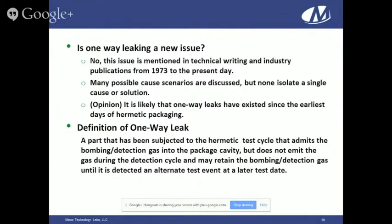Is one-way leak a new issue? No. It's been around quite some time, with publications discussing it all the way back to 1973. A number of scenarios have been proposed, but no single cause has ever been isolated. My opinion is that one-way leaks have likely existed since the beginning of hermetic packaging — it's just that now there is better technology and more data to demonstrate it. My definition of a one-way leak is a part that's been subjected to the hermetic test, admits the bombing or detection gas into the package cavity, but does not admit the gas during the detection cycle — and may retain the bombing gas until detected via Krypton 85 testing or RGA sampling.